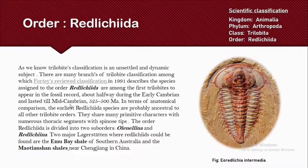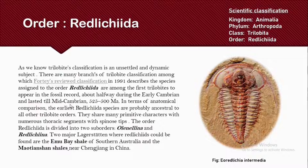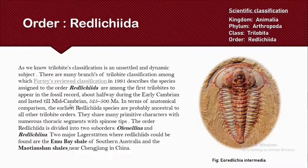The two major Lagerstätten that contain Redlichiida are the Emu Bay Shale in southern Australia and the Maotianshan Shale near Chengjiang in China. The special characteristic of these two Lagerstätten is that they are conservation Lagerstätten, meaning they contain soft body tissue parts.